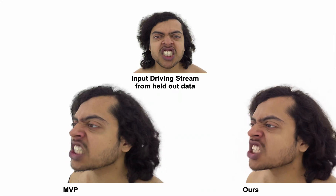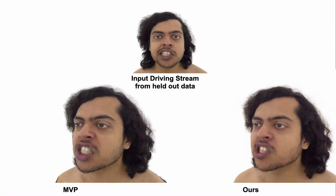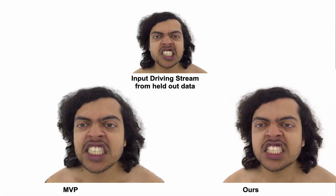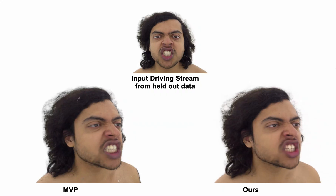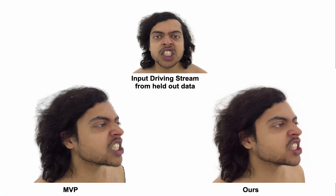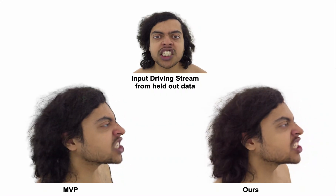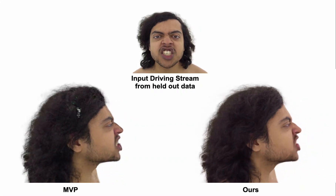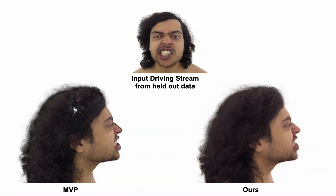We compare against the state-of-the-art in multi-view human head reconstruction approaches, Mixture of Volumetric Primitives (MVP). We highlight that MVP struggles to render details in regions that are sparsely captured by our camera setup, such as the highlighted region.